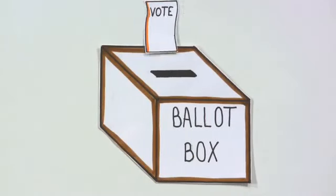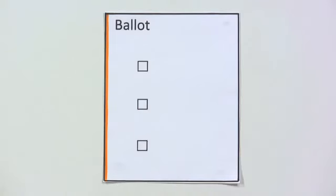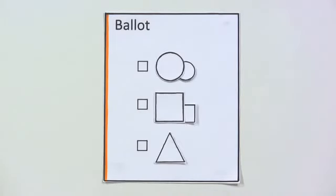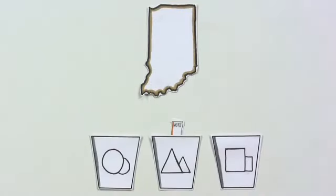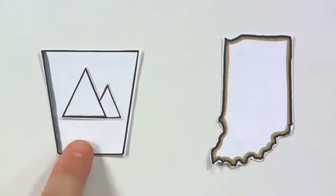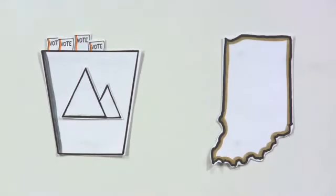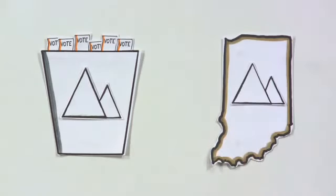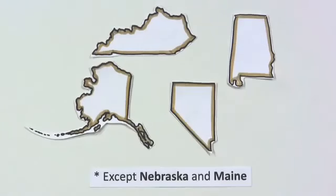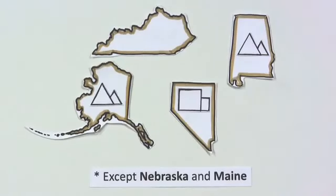It starts with your vote. On Election Day, you'll vote for President and their Vice President — you get one choice. Then, all the votes in your state are counted. The candidate with the most statewide votes becomes the candidate your state supports for President. This happens across the country until each state has selected their candidate.